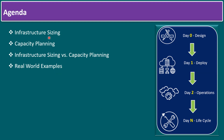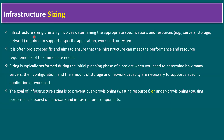Infrastructure sizing primarily involves determining the appropriate specifications and resources. Within a data center, the main resources are physical servers, storage, and network. Even in cloud environments — AWS, Azure, Google — the back end still has the same server equipment, storage, and network required to support a specific application, workload, or system. It is often project-specific and aims to ensure the infrastructure can meet performance and resource requirements of immediate needs.